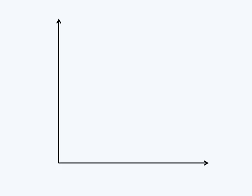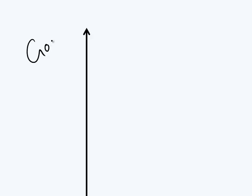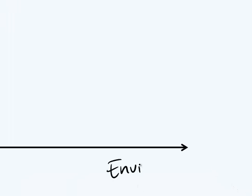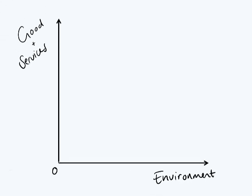There are two things we are looking at: the economy, so goods and services on one hand, and on the other hand we have the environment. At zero you have very bad environmental quality, and over here you have very good environmental quality. Here you have a very low economy, not a lot of goods and services, and here you have a very high economy, a lot of goods and services.